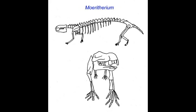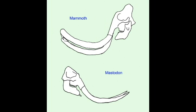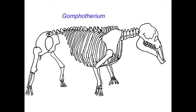Later relatives of elephants would then increase the size of these incisors to transform them into tusks, but different elephant groups would possess enlarged tusks in the upper jaw, some only in the lower jaw, and some in both the upper and lower jaws.